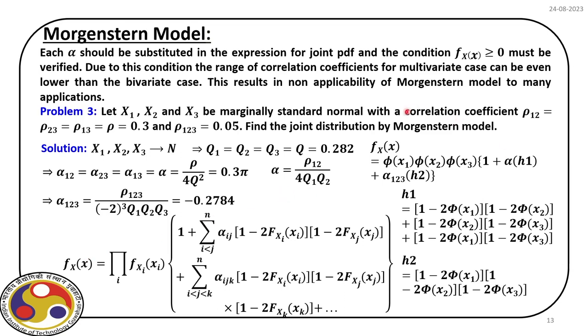We check whether our estimation is correct by comparing the marginal obtained from integration with the original definition. We also verify that the total volume under the joint PDF integrates to 1. The correlation coefficients are automatically satisfied since alpha was derived from them. With that, we close the discussion on the Morgenstern model. In the next lecture, we will continue with other models for isoprobabilistic transformation. Thank you very much.